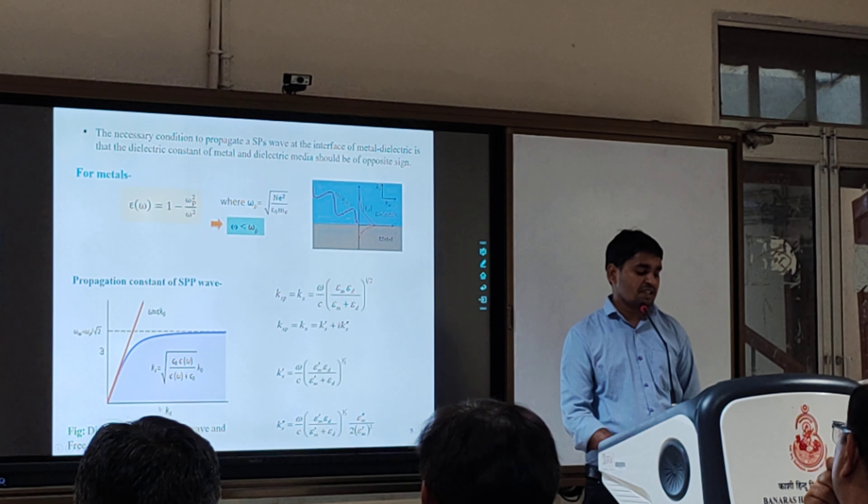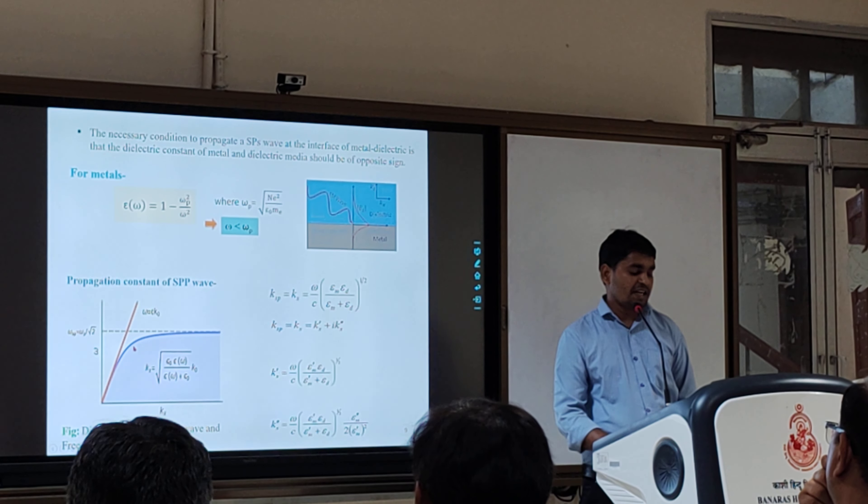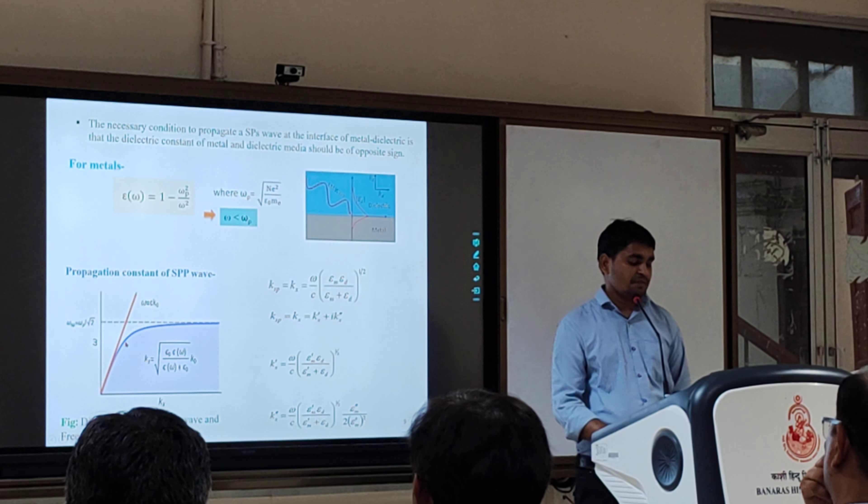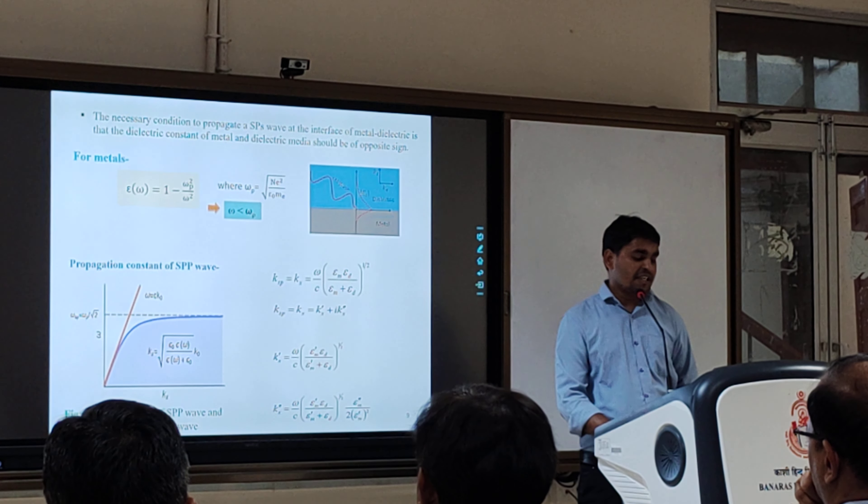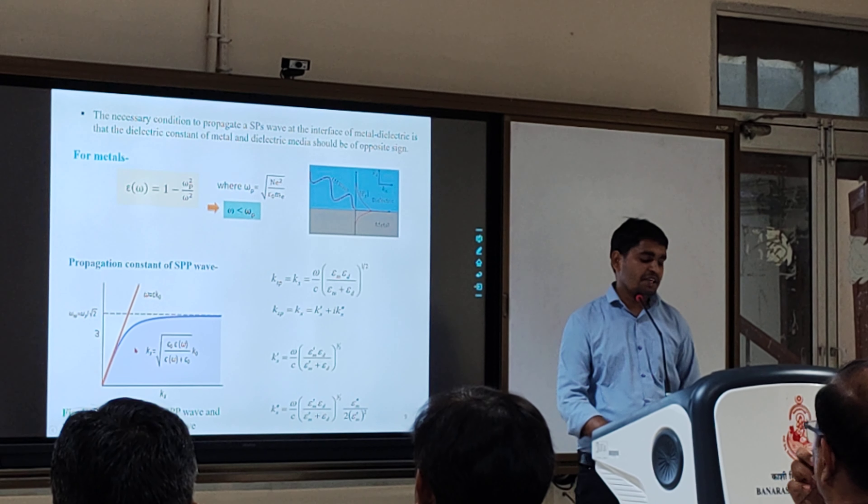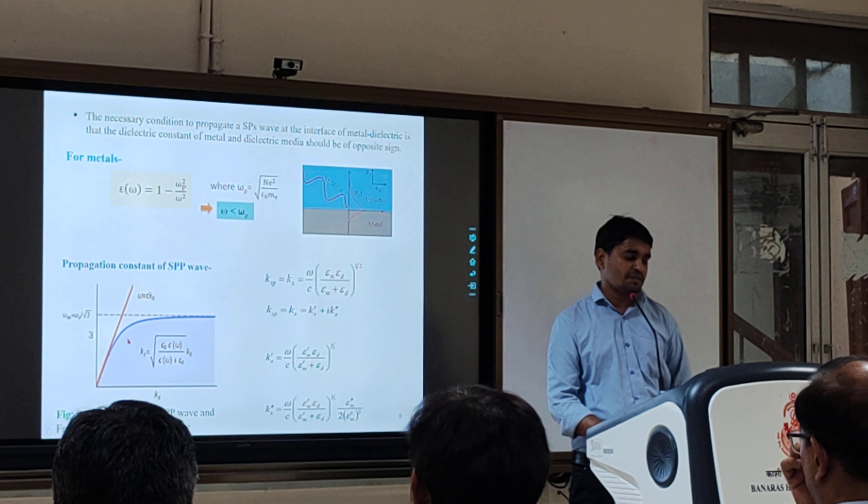This figure shows the dispersion curve of the surface plasmon wave and the free space electromagnetic wave, and both lines do not intersect one another. So surface plasmons cannot be excited by using incident light in free space. They can be excited using a prism in the Kretschmann configuration.